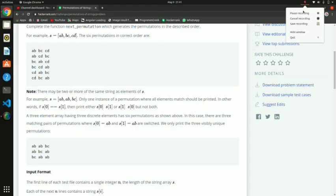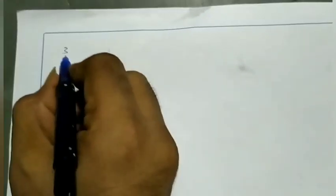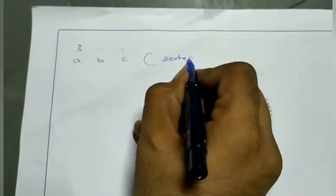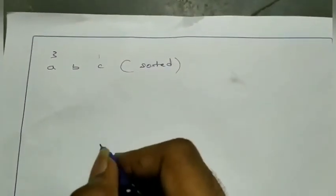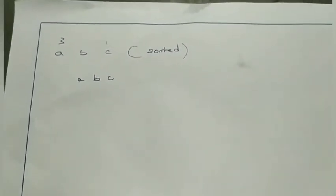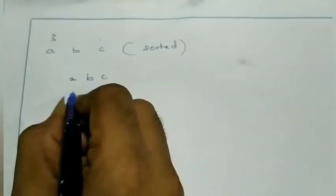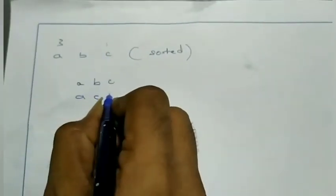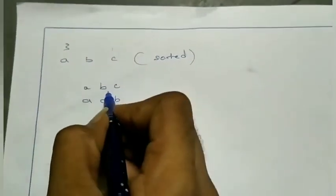The question gives a number and three words like a, b, c — given in sorted order. So how does permutation work? The next permutation: first will come a b c, this is one combination. Then a c b — this is the next permutation, it changes from here.